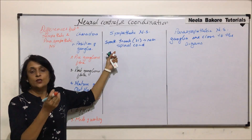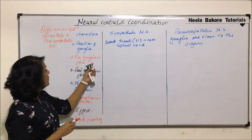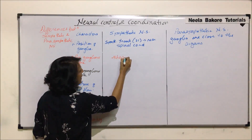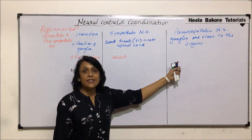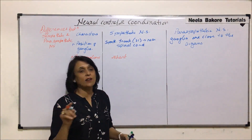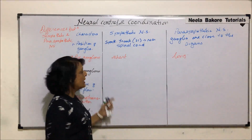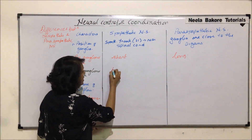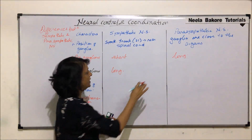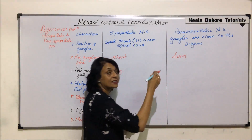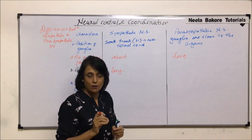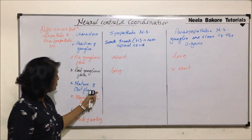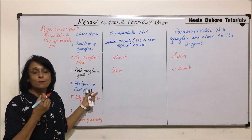So the ganglia are close to the organs — on the surface or just inside the muscle layer. Now, regarding preganglionic nerve fiber length: in the sympathetic nervous system, the preganglionic nerve fiber is short, whereas in the parasympathetic nervous system it is long. The reverse is true for post-ganglionic fibers — in the sympathetic system the post-ganglionic nerve fiber is long and branches, while in the parasympathetic system the ganglion is right on the organ so the post-ganglionic fiber is very short.